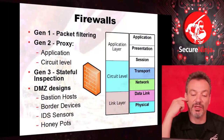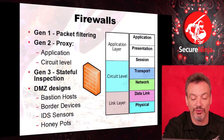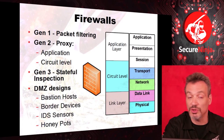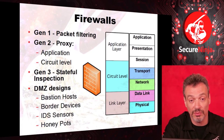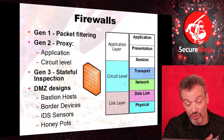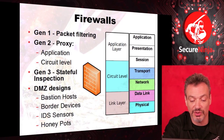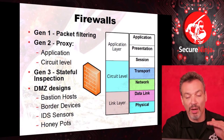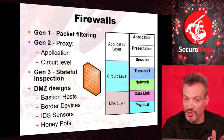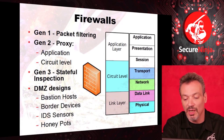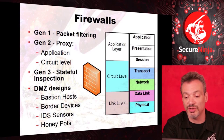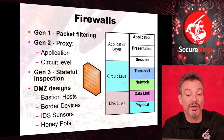Recapping the firewall generations: Gen 1 is a static packet filter — on your test, that's a layer three device. Gen 2 is the proxy, which could be application or circuit level — application layers look deeper into the protocol commands. Stateful inspection — originally layer three, but there's no state information in UDP, so we have to process it up. Checkpoint trademarked that term. They receive a packet at layer three, process it up to the application, and drop it back out on layer three.